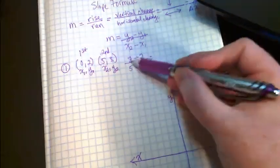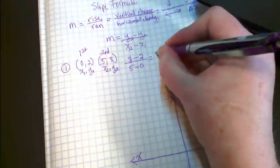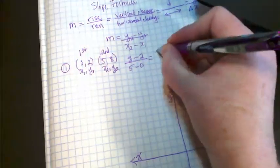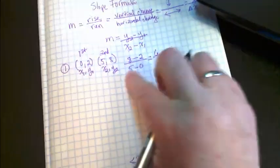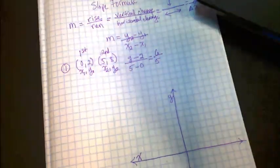And in the denominator space, I'm going to put the x sub 2 and the x sub 1. That would be 5 minus 0. And then I'm going to subtract. 8 minus 2 is 6. And 5 minus 0 is 5. So our slope here is 6 over 5.